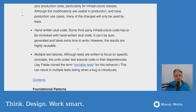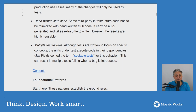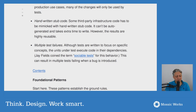Multiple test failures is another trade-off: all tests are written to focus on specific concepts, but the unit under test executes code in its dependencies, which can result in multiple tests failing when a bug is introduced. For me this is one of the bigger concerns, but the risk increases with the number of units under test. If you're testing a single behavior, it's unlikely you'll break everything with one change, and if you do break everything, it will be easy to find. So I wouldn't be too worried about this.